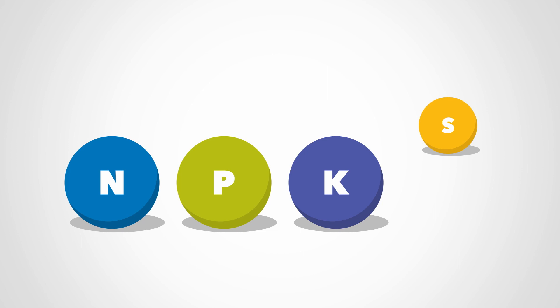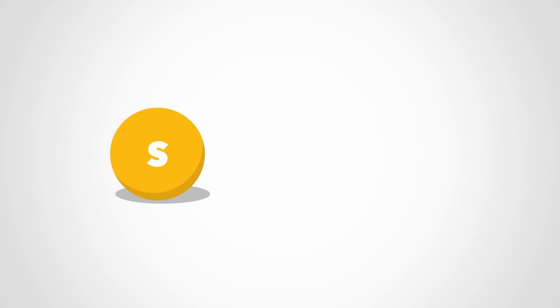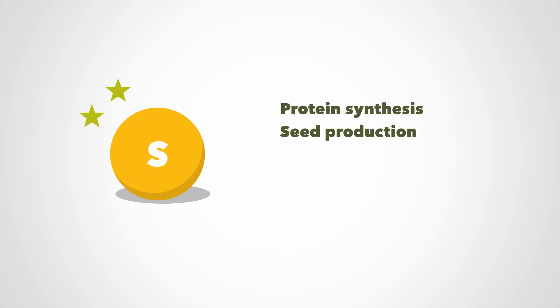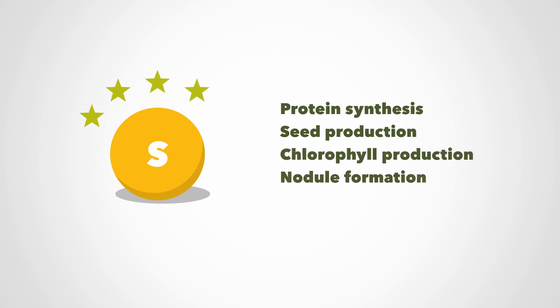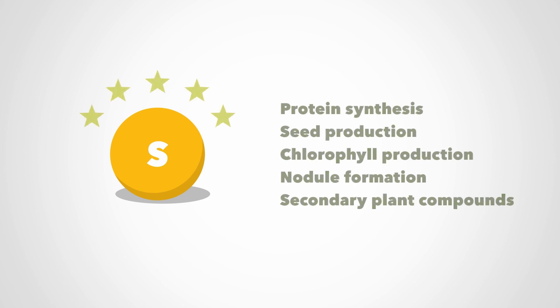Although sulfur is categorized as a secondary macronutrient behind nitrogen, phosphorus, and potassium, this does not imply it is less important. Sulfur is required for several important functions within the plant, including protein synthesis, seed production, producing chlorophyll, nodule formation on root hairs of legume crops, and secondary plant compounds. Deficiency results in low grain quality in crops like wheat.